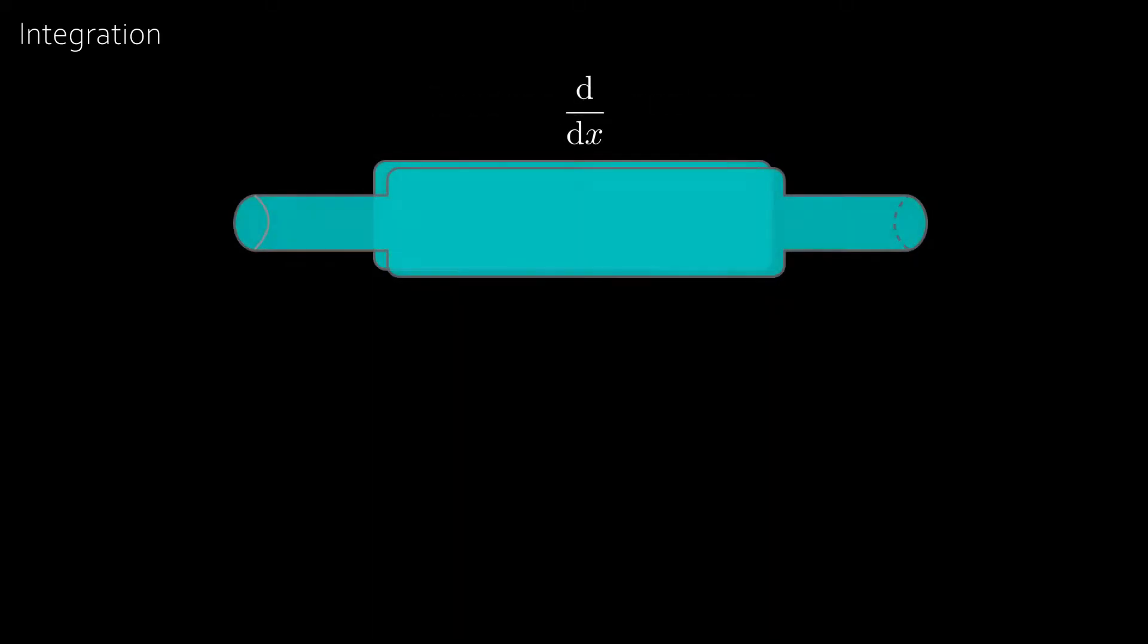Now we can imagine differentiation as being a machine where if we input x to the power of n then we get n times x to the n minus 1. And if we look inside this machine we see that all it's doing is multiplying by the power and then reducing the power by 1.